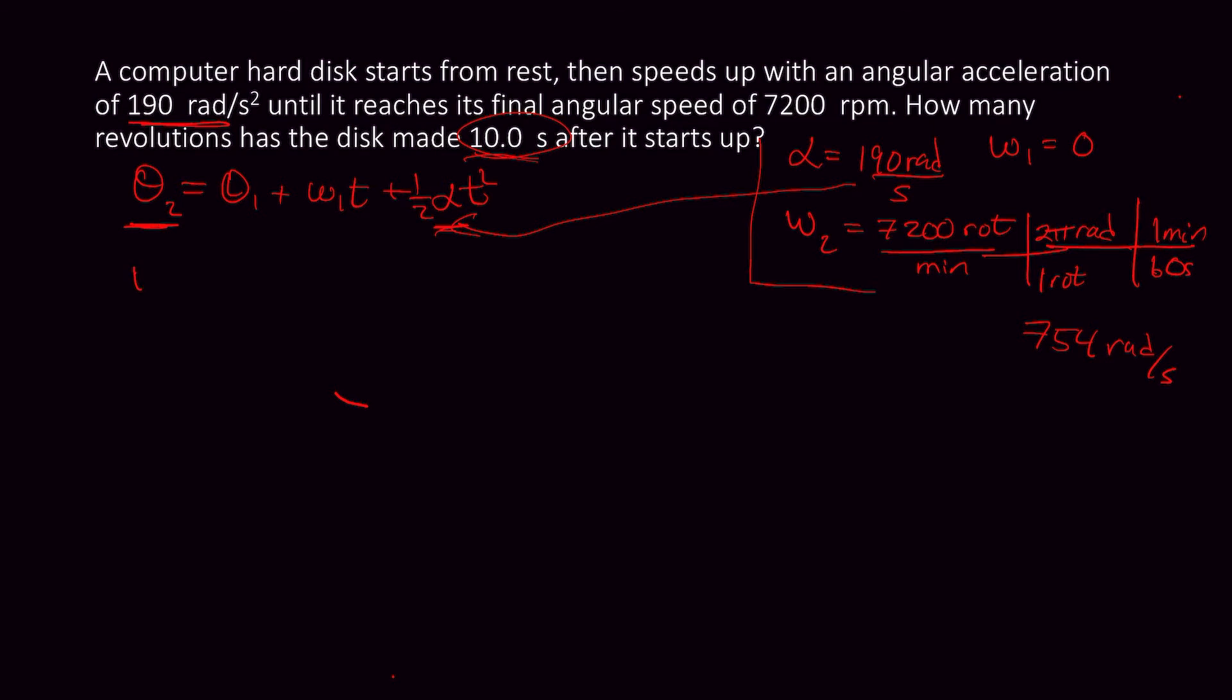Because there's also this equation, and that's W2 is W1 plus αt. So watch what happens when we say W2, this is 754 equals 0, because the initial W1 is 0, plus, now I know this here is 190, and that's t. Now, let's see what happens if I solve for t. Well, it turns out t here is 4.0 seconds.